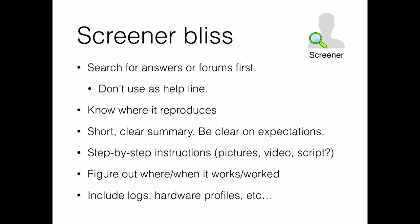So what can you do to get screener bliss? Search for answers on forums first, search for a proper forum to ask your question — you're reducing the number of help-me bugs that make it into the system. Don't use this channel as a helpline. Know where your bug reproduces: does it reproduce only on this machine or that machine, on OS A or OS B, which version of the product, and against what mail servers? More importantly, show where it doesn't reproduce as well, because that will give them a search area to look in.